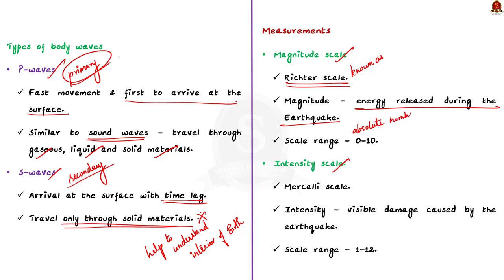The second one is intensity scale and it is also known as Mercalli scale. Here, the intensity scale takes into account the visible damage caused by the earthquake event. And the range of the intensity scale is from 1 to 12.